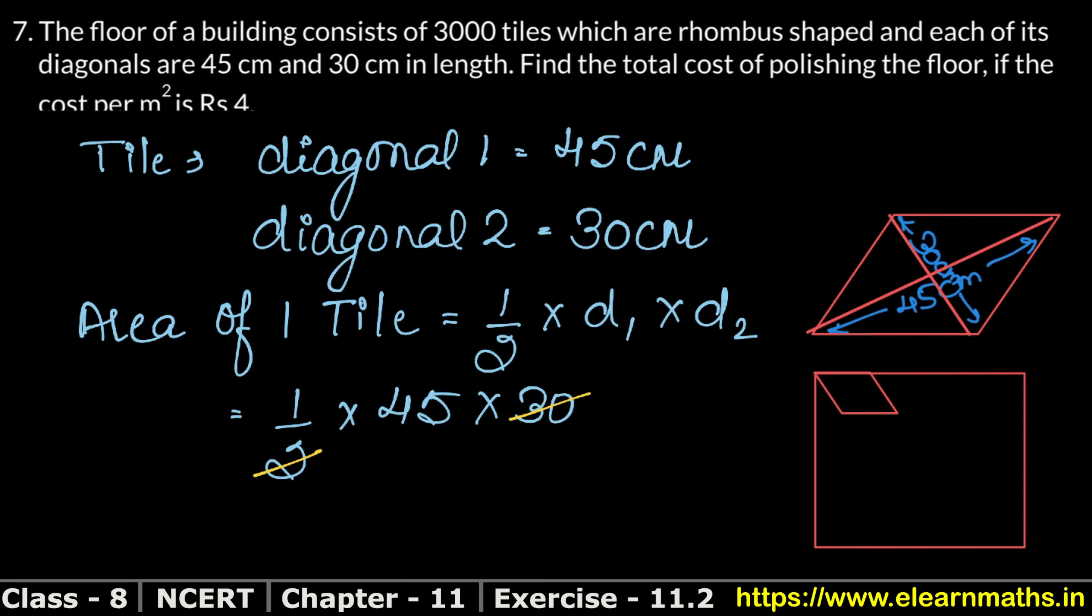Now we will cancel it. 2 into 15 is 30, giving us 15 times 45. 15 fives is 75, carry 7. 15 fours is 60, 60 plus 7 is 67. So the area is 675 cm square for one tile.